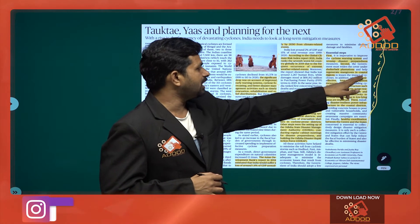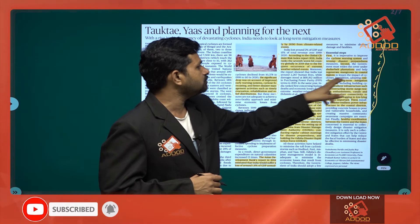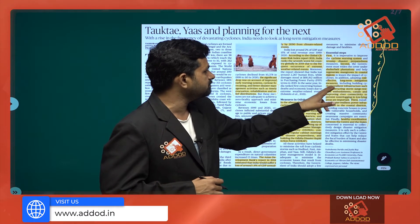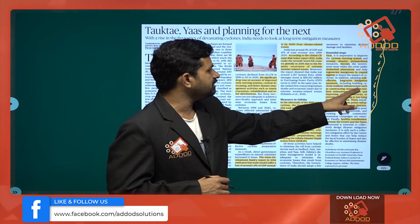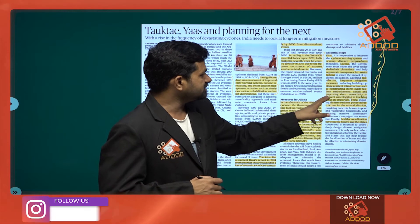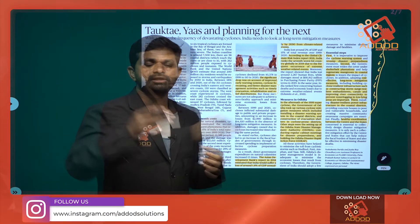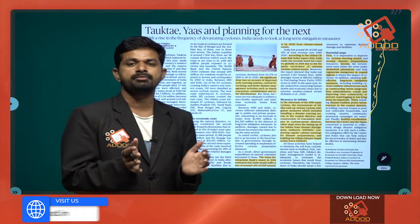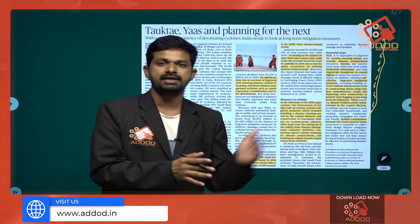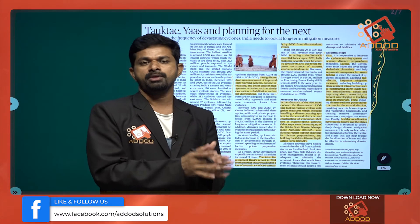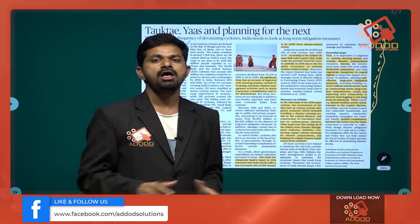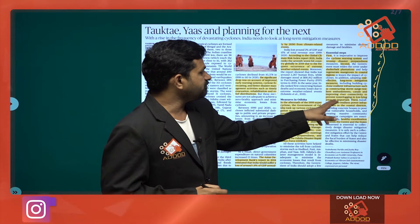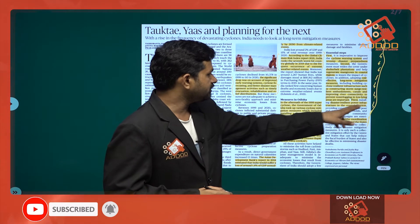The government must widen shelter belt plantation coverage and help regenerate mangroves in coastal regions to lessen the impact of cyclones. In addition, adapting cost-effective long-term mitigation measures including building cyclone-resilient infrastructure — such as constructing storm-surge-resilient embankments and improving river and canal connectivity — is essential. Better canal connectivity ensures smooth water flow, preventing clogging and submergence of low-lying areas.